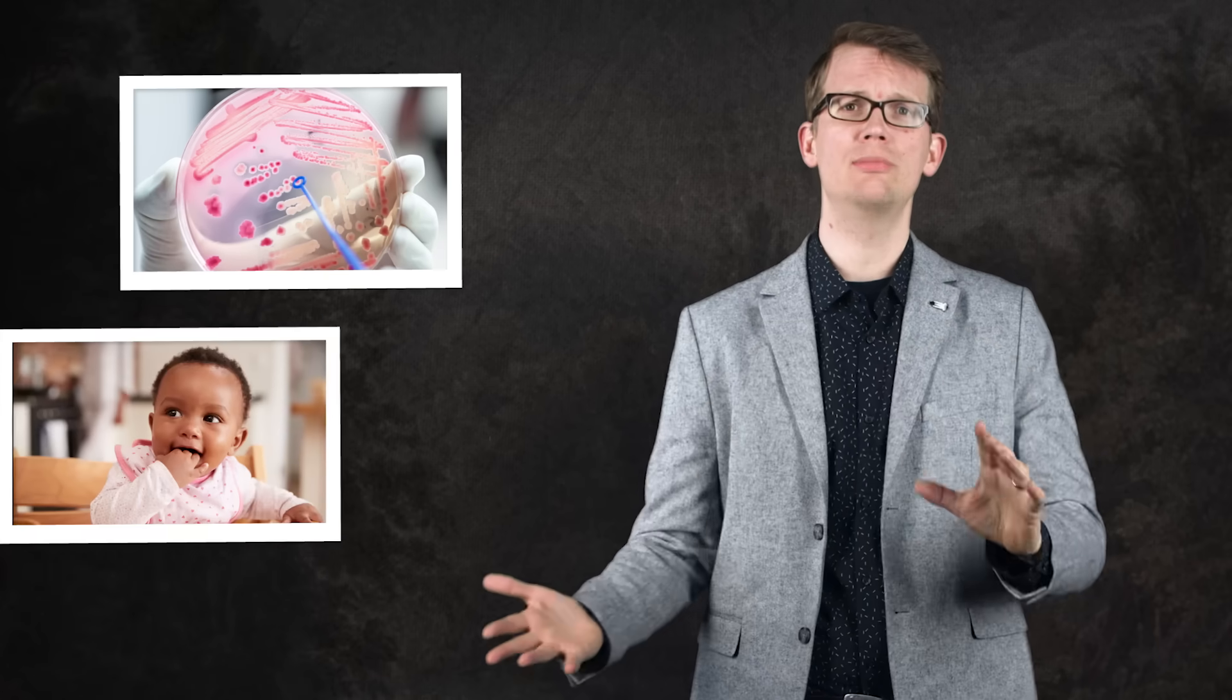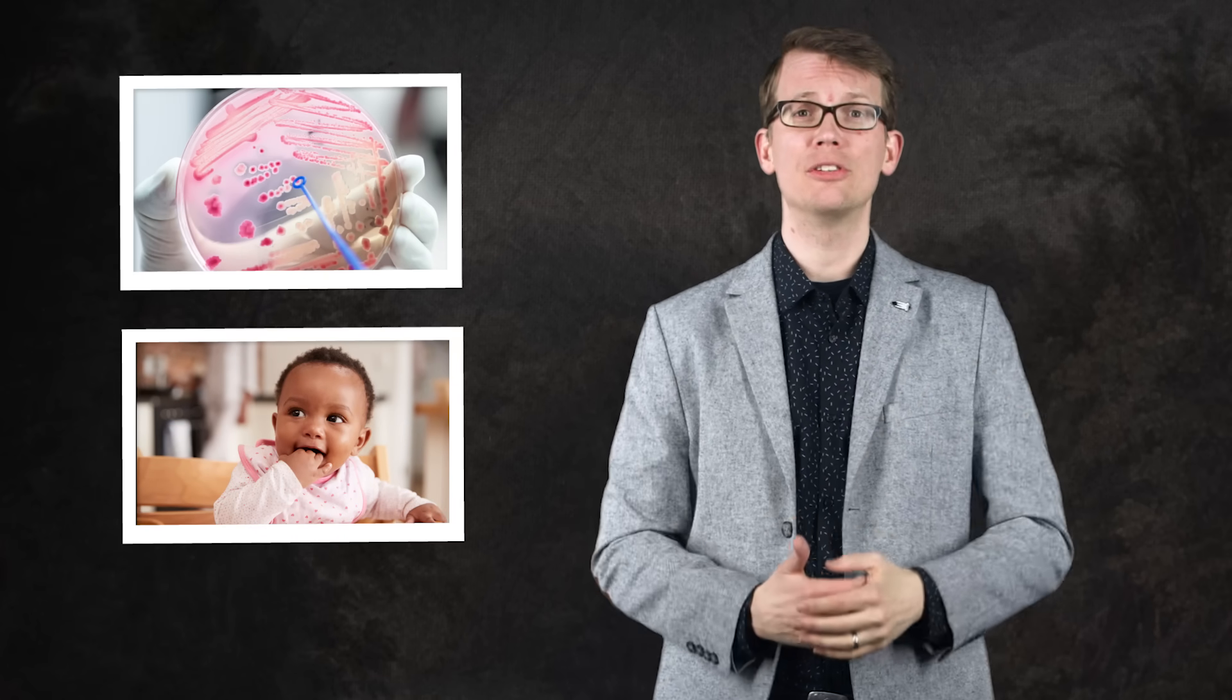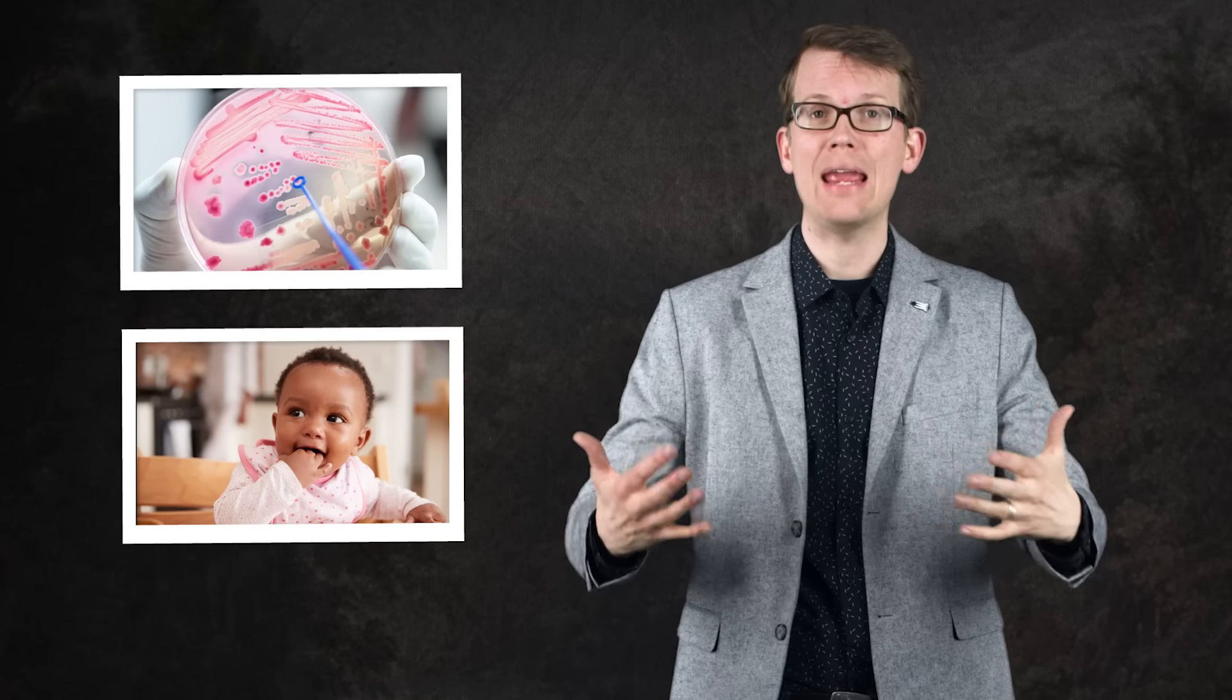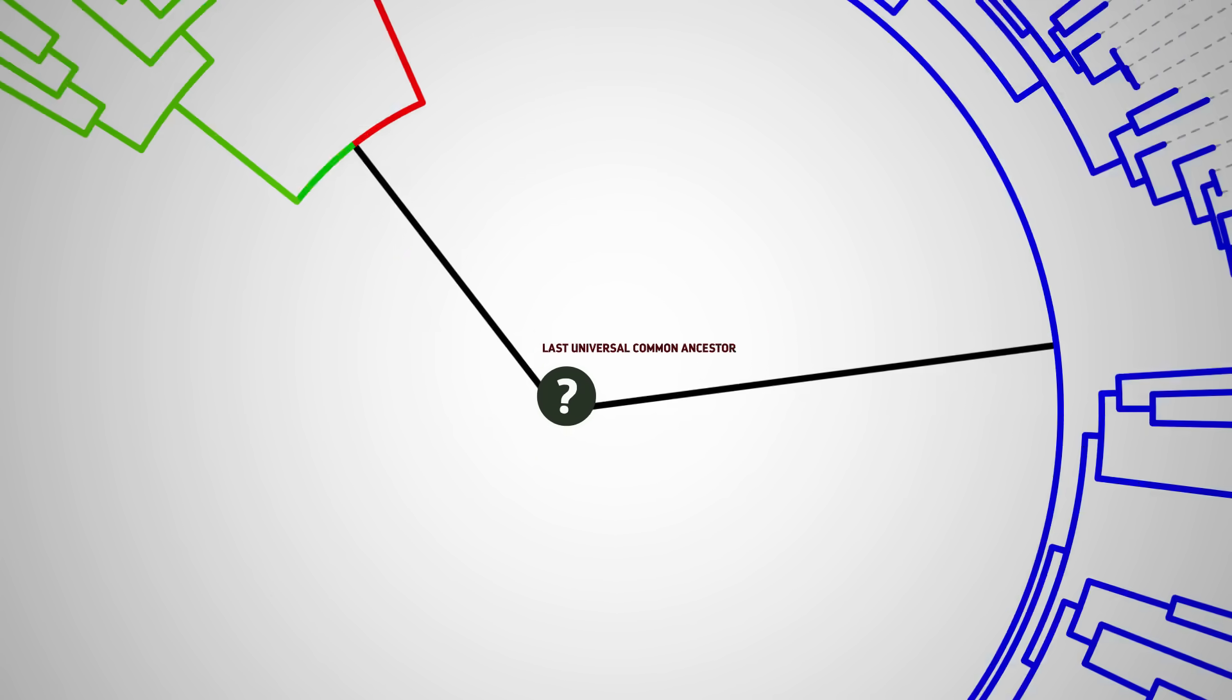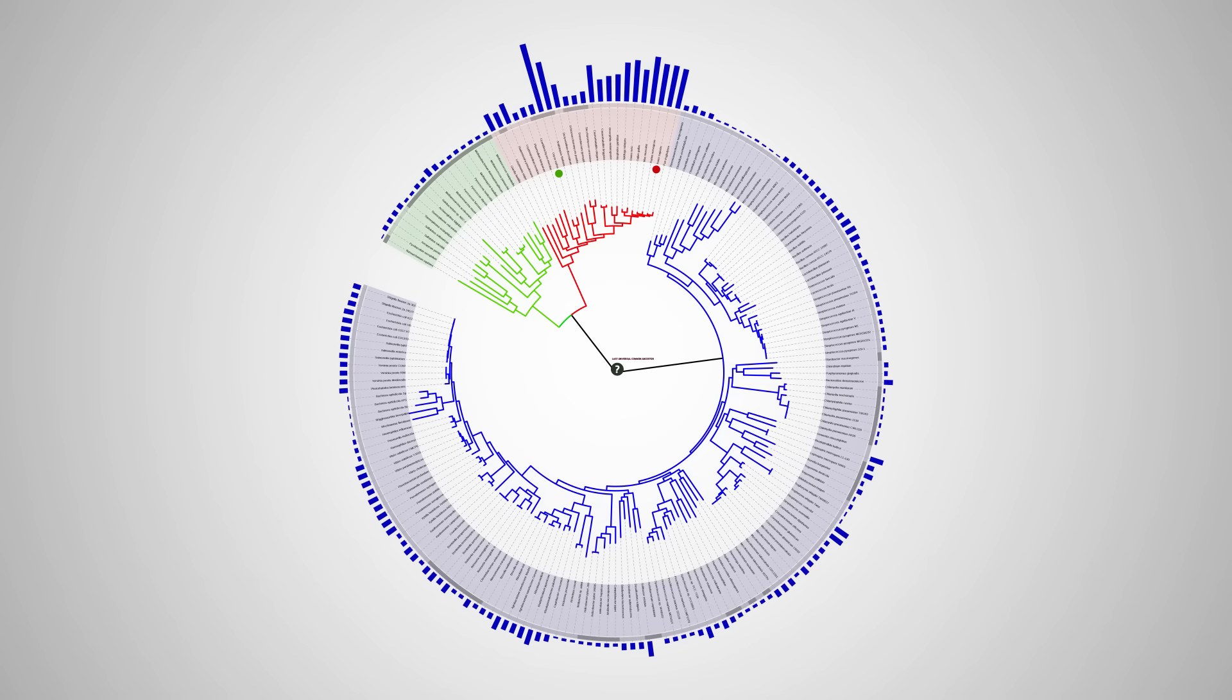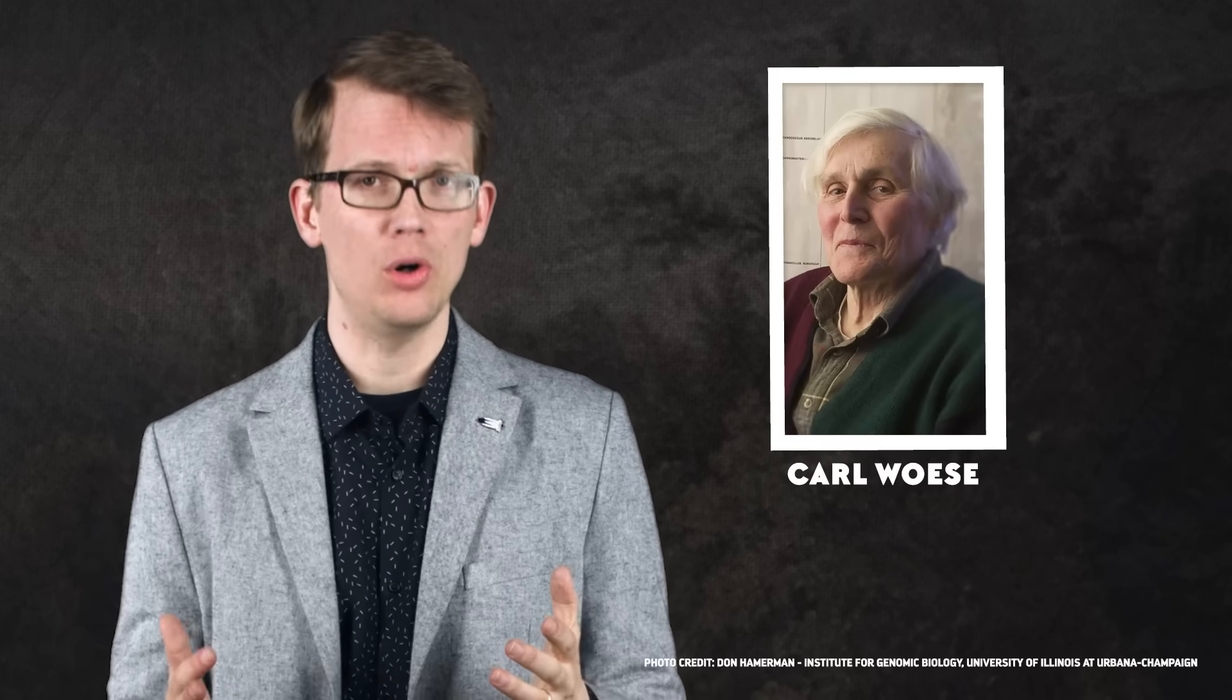From bacteria to humans, that's one of the best arguments to support the notion that everything came from the same place. It's also why most of the research that's gone into learning what Luca was has involved comparing genomes of all kinds of different things to see what else they have in common. One of the first to take this approach was American biologist Carl Woese.